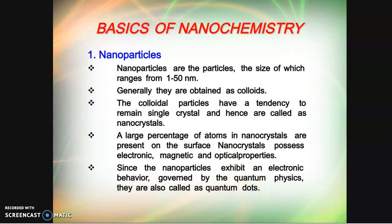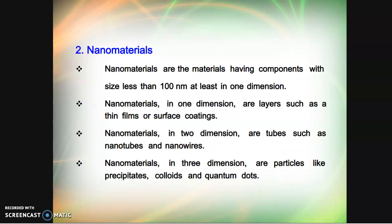Nanomaterials have components with size less than 100 nanometers in at least one dimension. One dimension includes layers such as thin films or surface coatings. Two dimensions are tubes such as nanotubes and nanowires. Three dimensions include precipitates, colloids, and quantum dots.